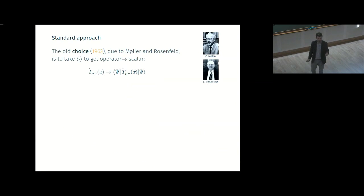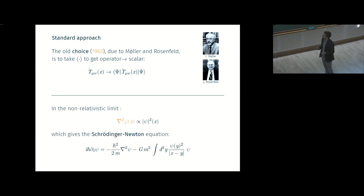So, the old choice, the old answer to this problem was done by Christian Møller and Leon Rosenfeld, and you just take the expectation value. That's the cheap way to do it. I'd like to insist that it's really a choice. You have no natural prescription for doing that. And it's also quite weird because Leon Rosenfeld was himself really a strong fervent Copenhagen orthodox, and it's not so natural to do that if you don't think there is some reality in the state.